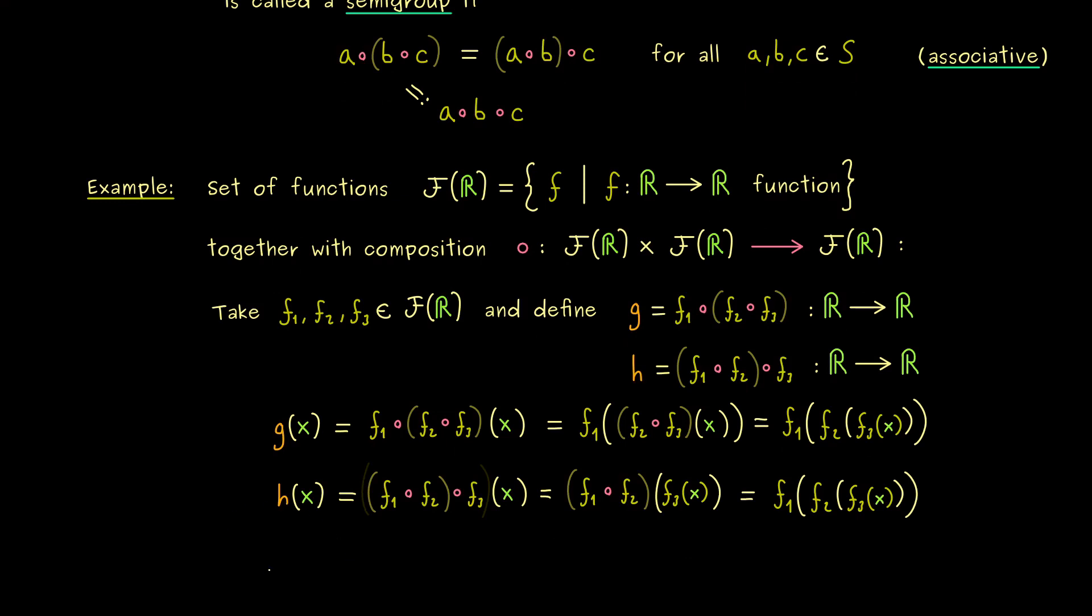And with that we have our first semigroup. And now you know, we would write it as a pair: set combined with the binary operation gives us the semigroup. Okay, then I would say, with the next videos, let's look what we can do with such semigroups. So I really hope we meet again, and have a nice day. Bye bye!